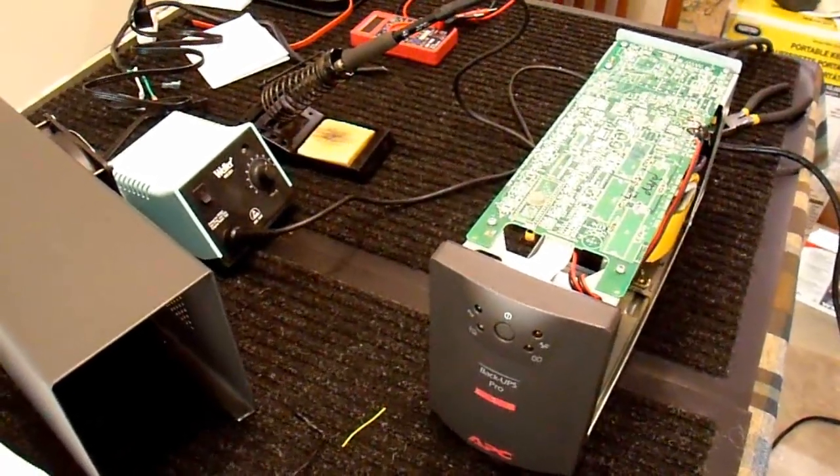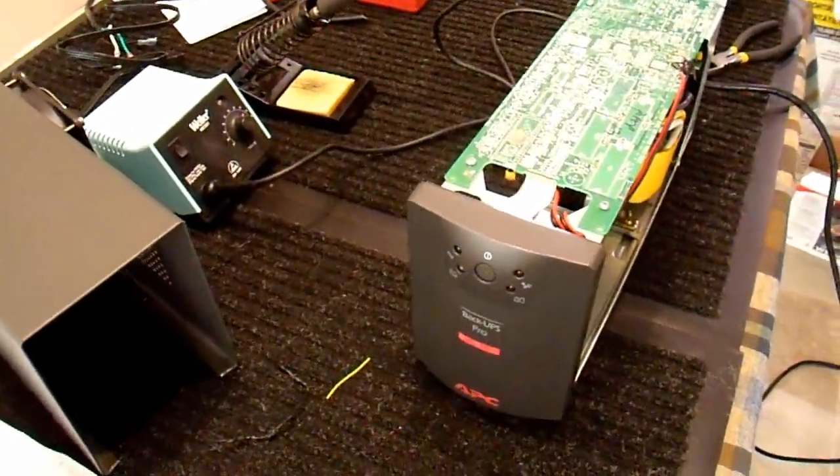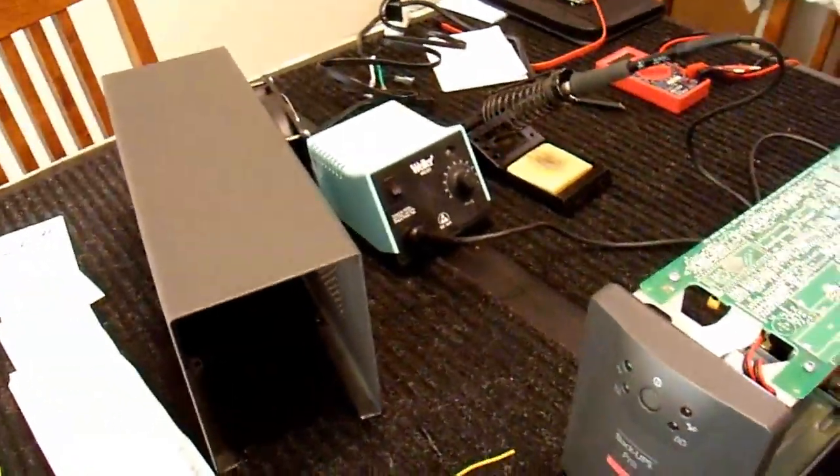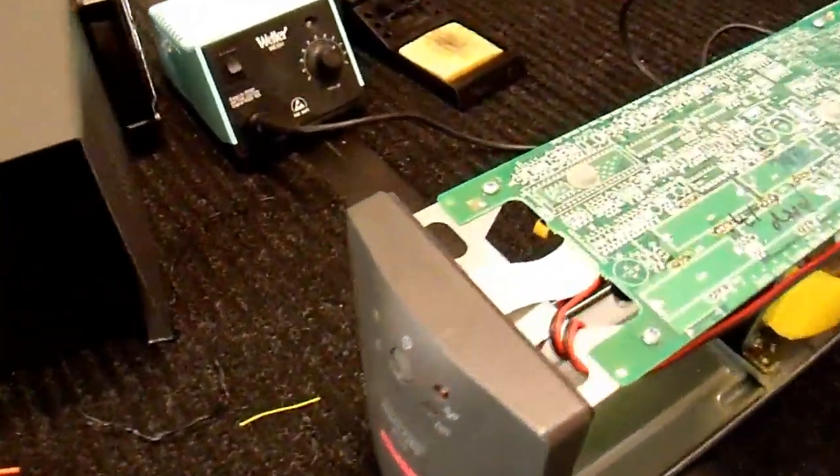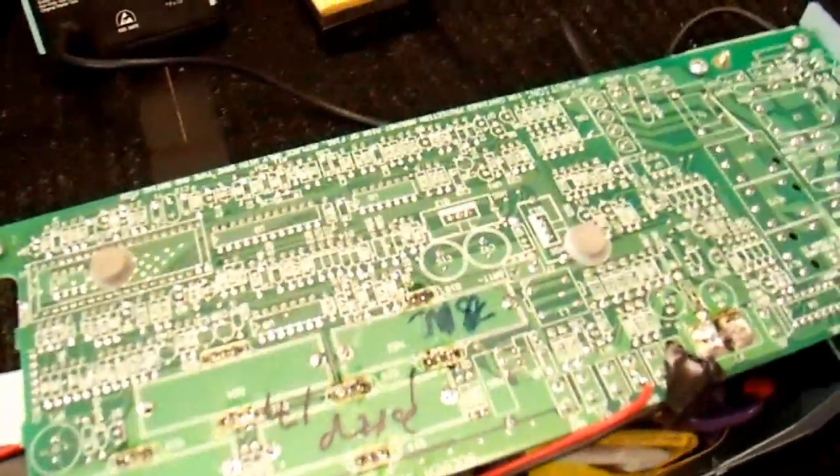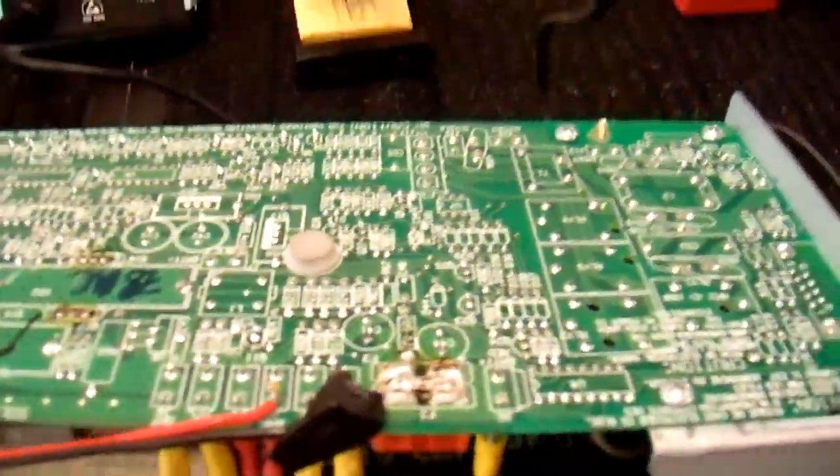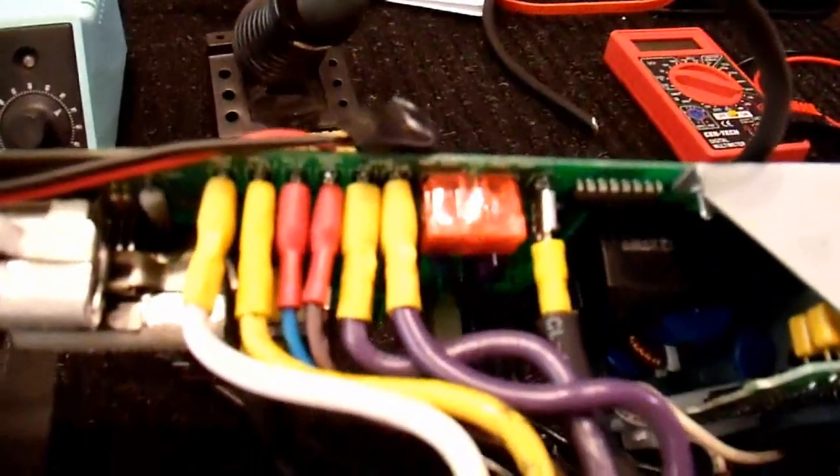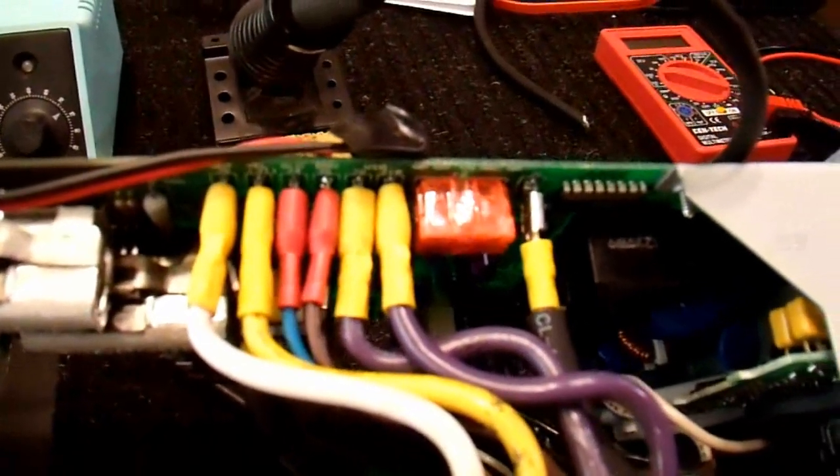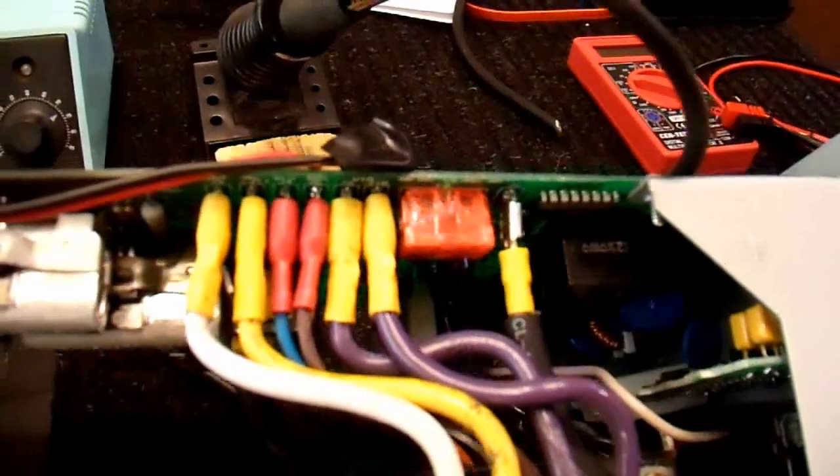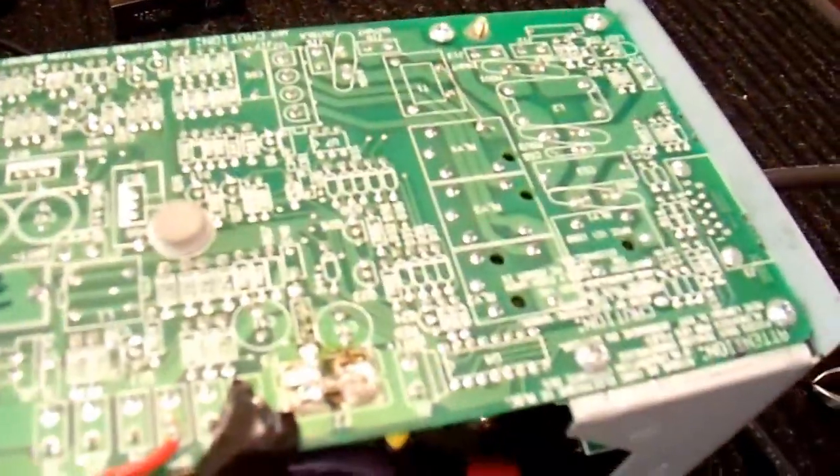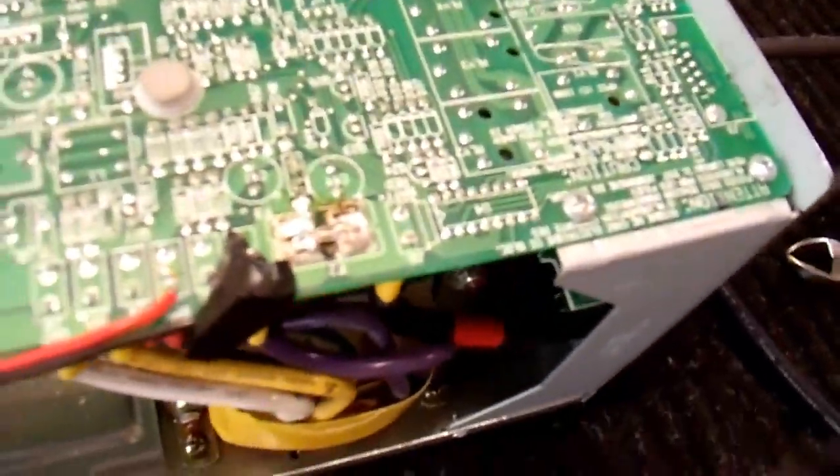A quick update on my APC Back-UPS 650 that I modified earlier from a UPS into an inverter. I tried a power load that was apparently too large for it because the fuses on here, there's two 40-amp fuses under there, that red thing in between the wires in parallel. Those fuses failed, and the UPS would no longer run, obviously.